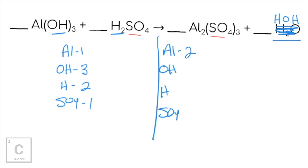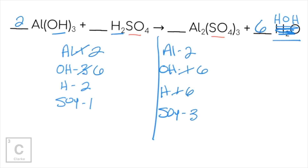In our products we have two aluminums, three sulfates, one hydrogen, and one hydroxide. Let's start with aluminum — put a two, giving two aluminums, but now we have six hydroxides. Let's fix that: six hydroxides. That messed up hydrogen, so I'll put a three, giving six hydrogens. Now I have three sulfates — and it's already a three on the reactant side. Aluminums: two; hydroxides: six; hydrogens: six; sulfates: three. Coefficients are in the lowest whole number ratio.